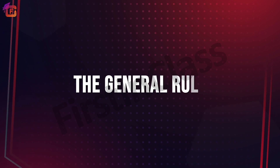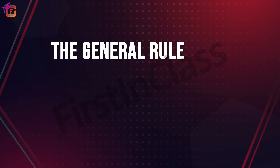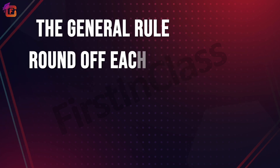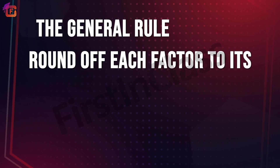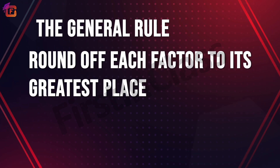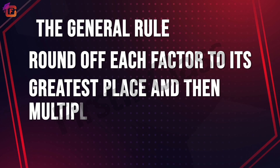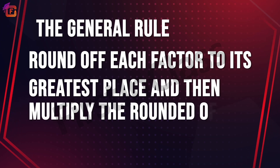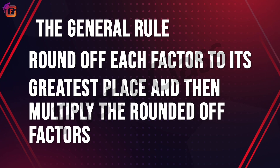Here is the general rule for rounding: we round off each factor to its greatest place and then multiply the rounded-off factors to estimate the outcome of the product.